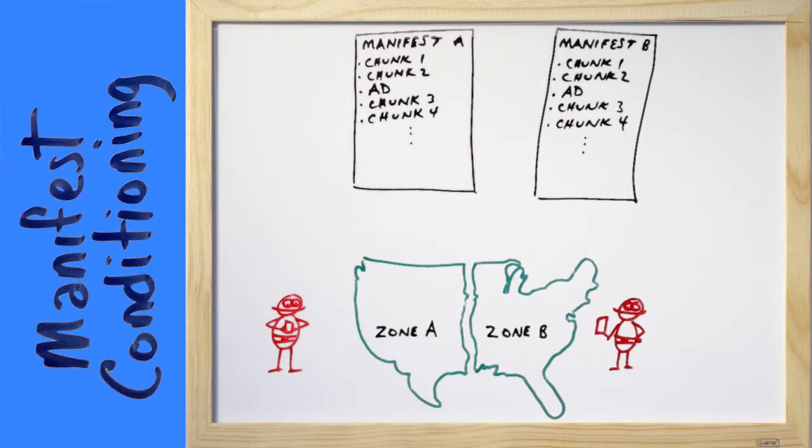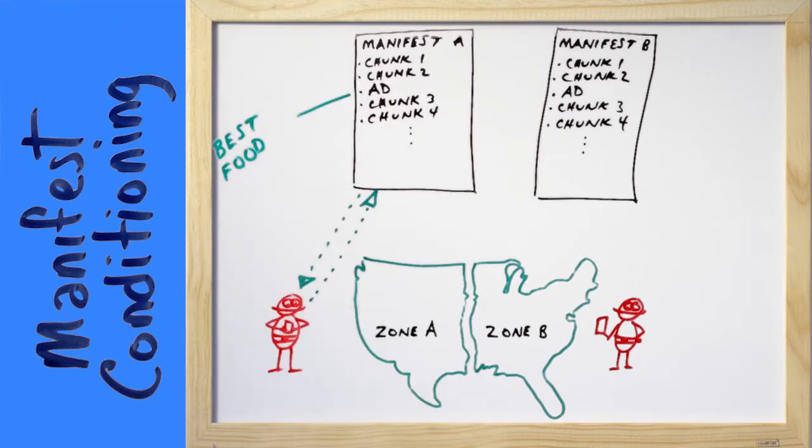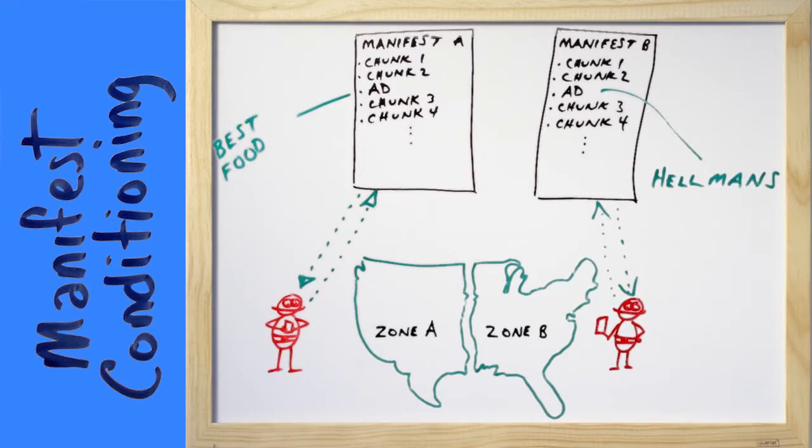There are several ways to do that, with pluses and minuses for each. The first is called Manifest Conditioning. This is a key step in the ad insertion process and has to be done anyway. You place the ESAM — that's an Event Signaling and Management trigger, as specified by CableLabs for processes like this — right in the manifest, and you do it while you're encoding your video. On the plus side, it's easy to manage and it can be done as you encode the video. The downside is that you're limited to whatever you encode, which pretty much means a national or limited number of zone-based ads.